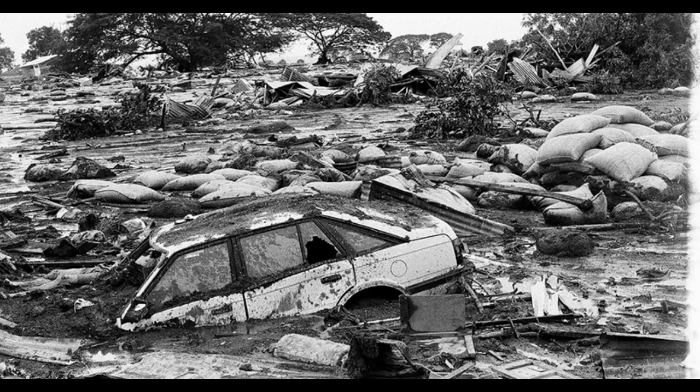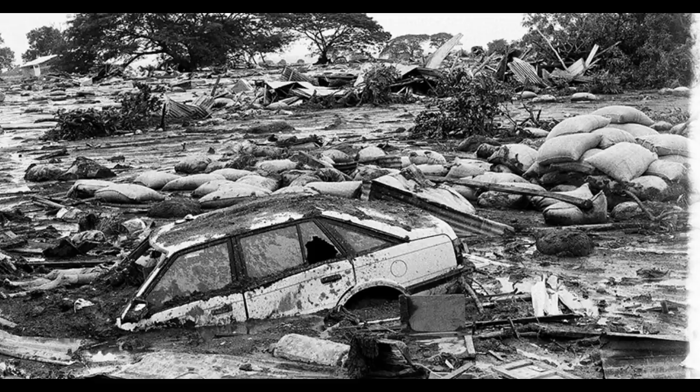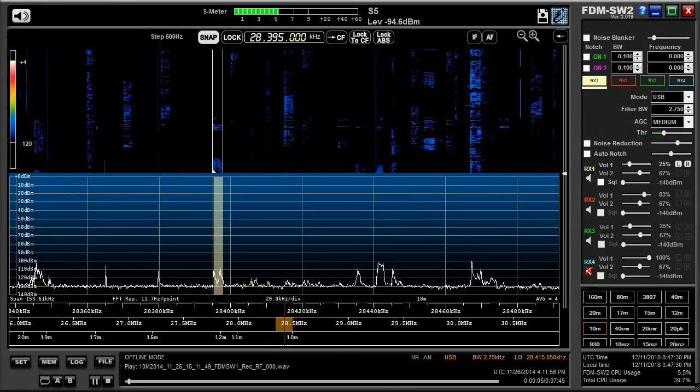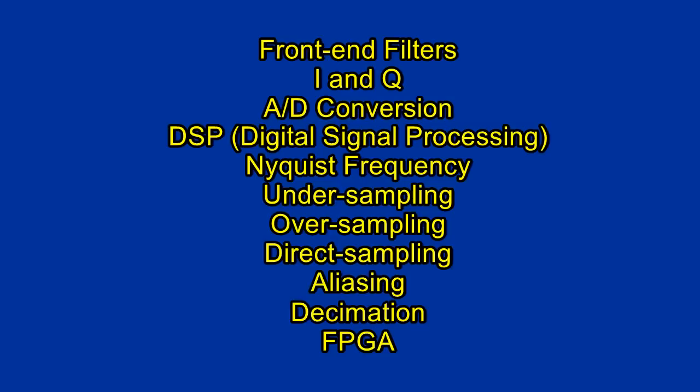Another similar term — oversampling — has nothing to do with the previous discussion. Oversampling refers to the idea of sampling way beyond our needs. This might seem to be a waste, but the madness has a purpose: the data representing the higher unneeded frequency spectrum can be exchanged for a higher bit depth of the spectrum we are using — another example of math magic. This process is called decimation. Hopefully by now you have a pretty good idea of how things can be done, along with a few new words in your vocabulary. We learned about front-end filters, I and Q, A to D conversion, DSP, the Nyquist frequency, undersampling, oversampling, direct sampling, aliasing, decimation, FPGAs, and a bit more.